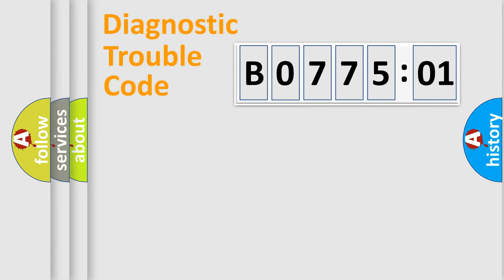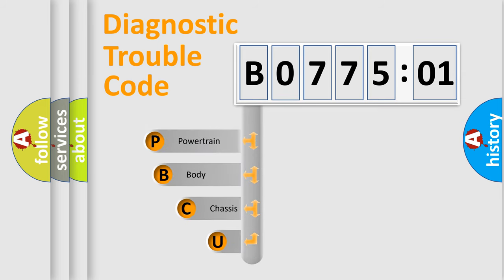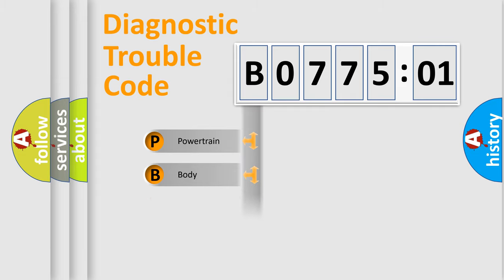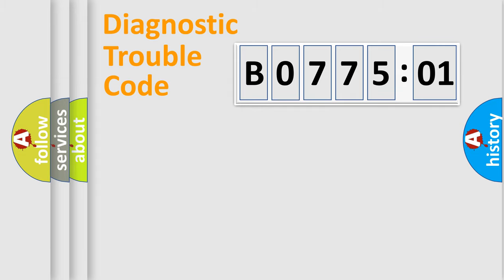Let's do this. First, let's look at the history of diagnostic fault code composition according to the OBD2 protocol, which is unified for all automakers since 2000. We divide the electric system of the automobile into four basic units: Powertrain, Body, Chassis, and Network.